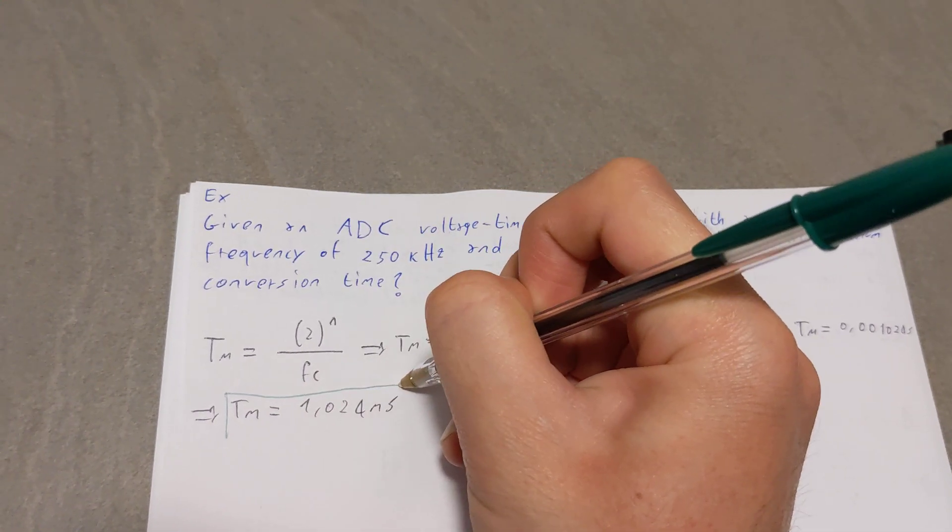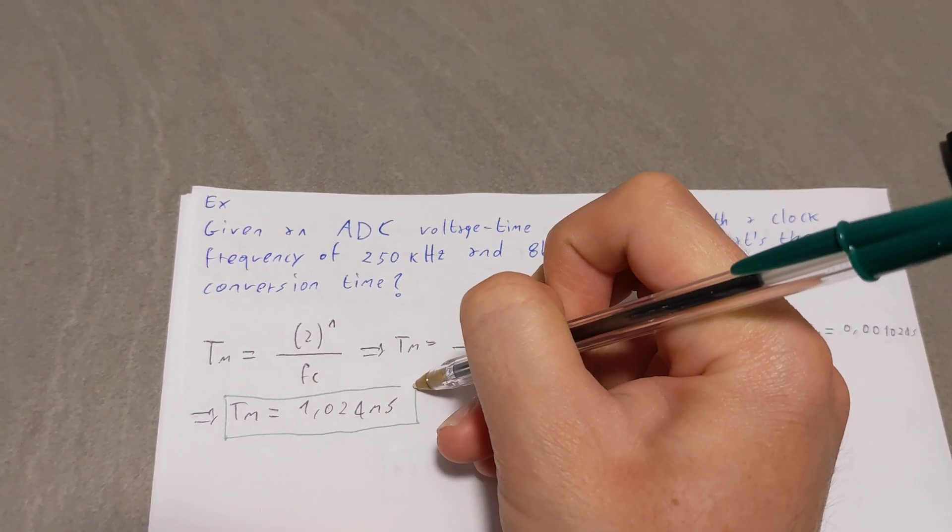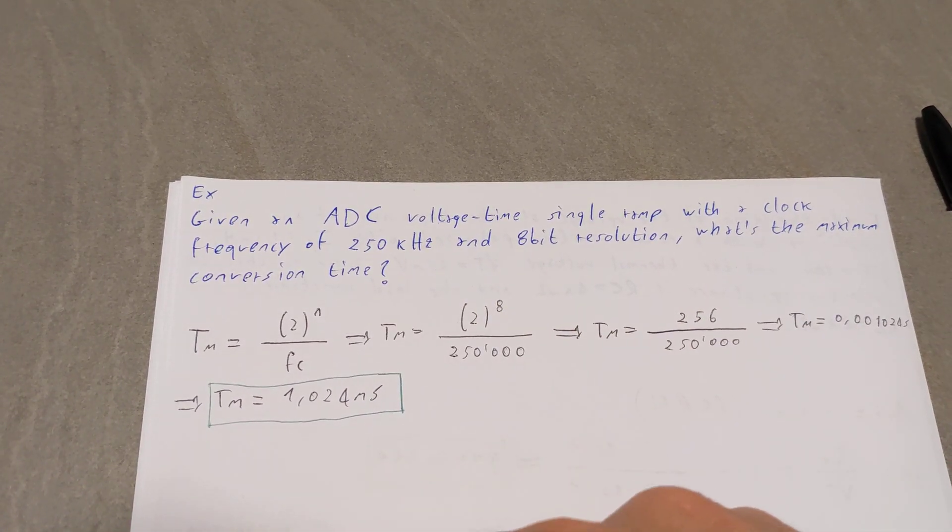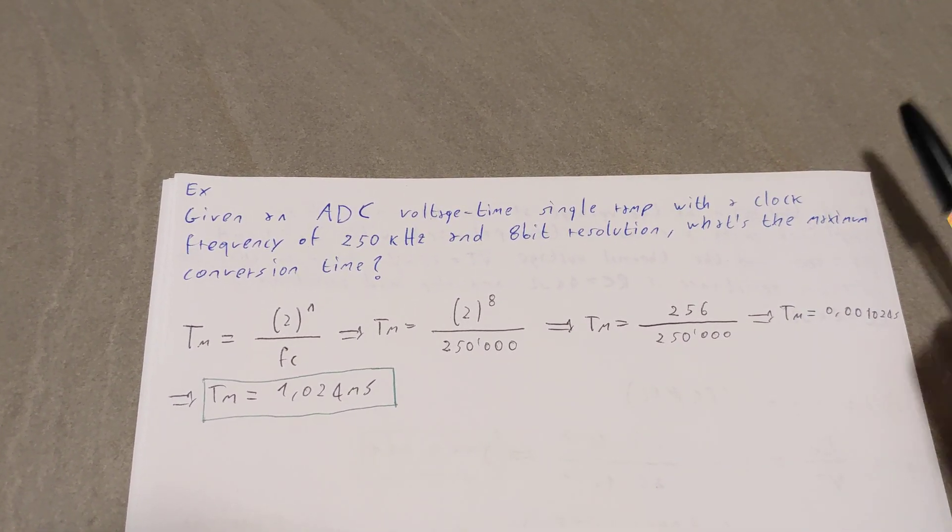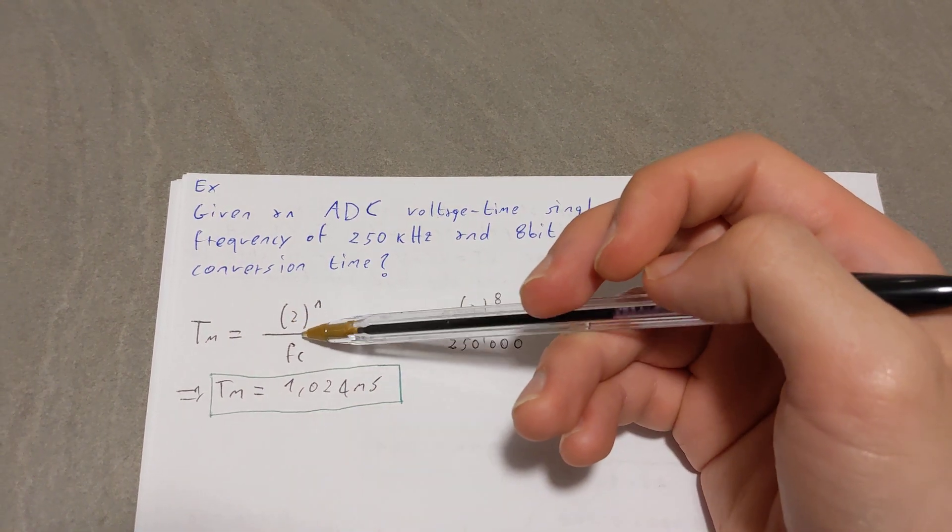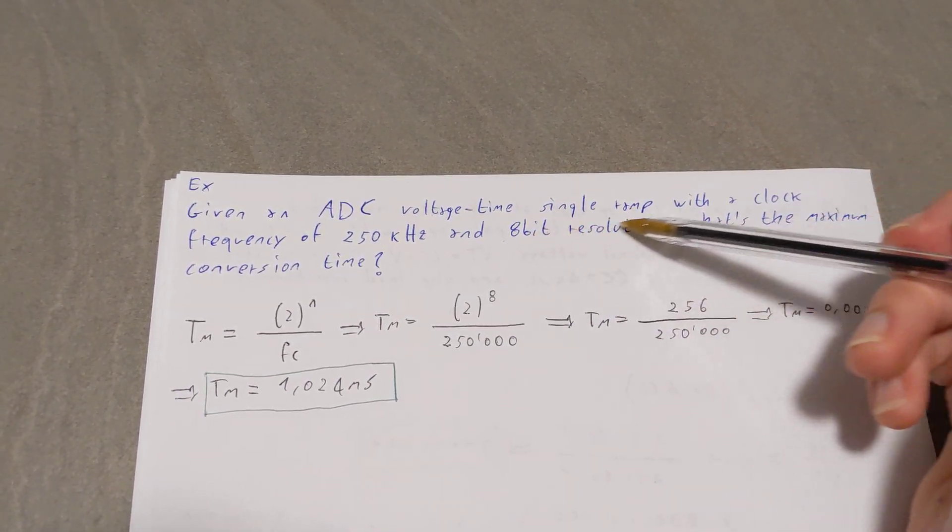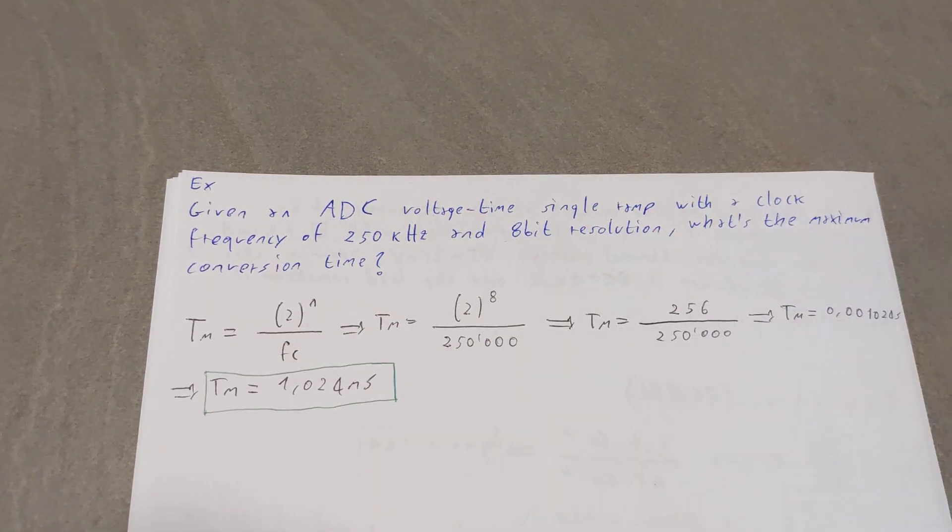So again, to find out how long it's going to take for a conversion to occur in this kind of analog to digital converter, you're just going to use the formula 2 raised to the power of whatever the resolution is over the frequency.